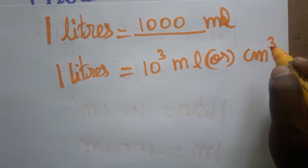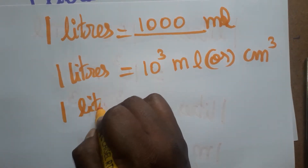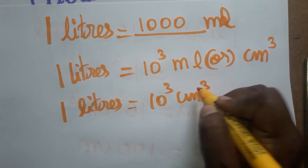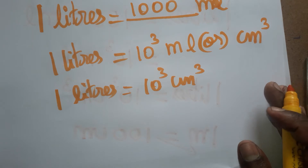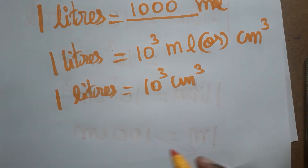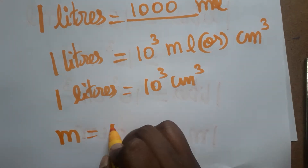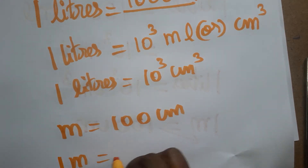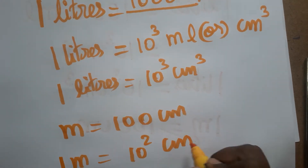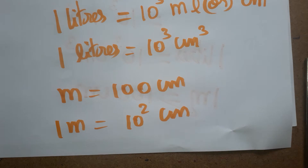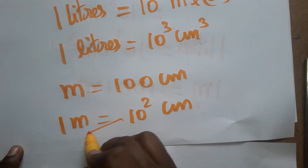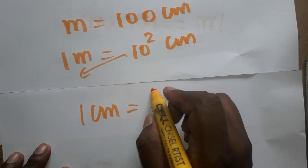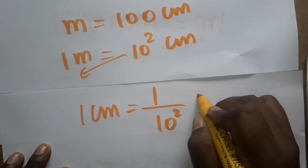Now ml has another name — we can call it centimeter cube. So one liter is equal to ten power three centimeter cube. Now we need to convert centimeters cube to meter cube. We know one meter is equal to one hundred centimeter, which we can write as ten squared centimeter.